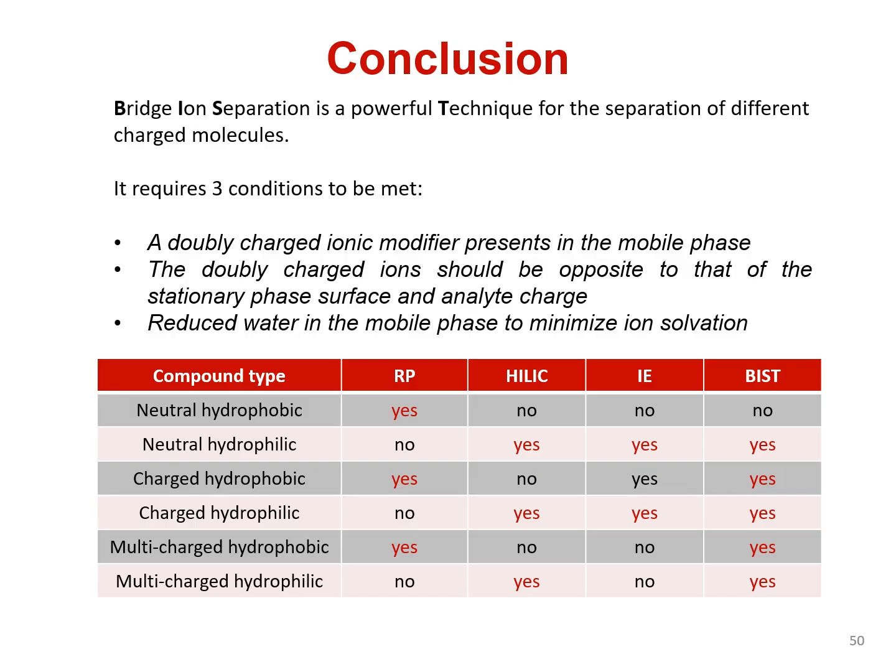We saw today that three conditions need to be met in order to generate BIST interactions. First, a double-charged ionic modifier. Second, an ionic modifier that is oppositely charged to both the analyte and the stationary phase. And third, a reduced water concentration in the mobile phase. Once these conditions are met, BIST can retain and separate nearly every type of compound, whether it's charged or not charged, large or small, hydrophilic or hydrophobic.